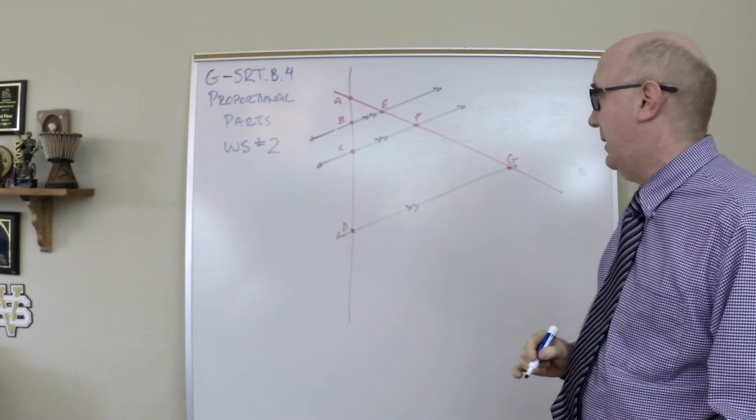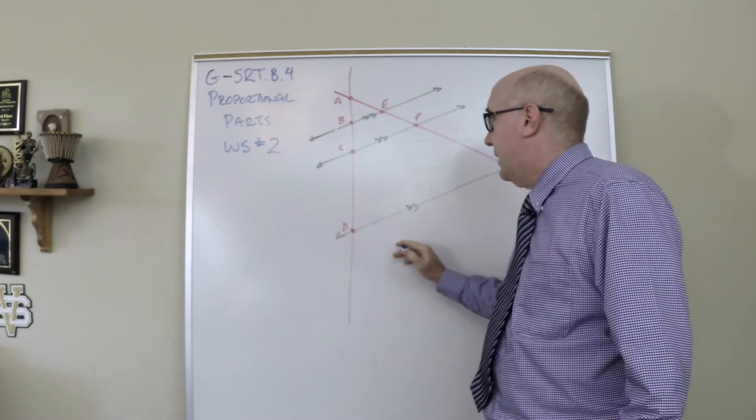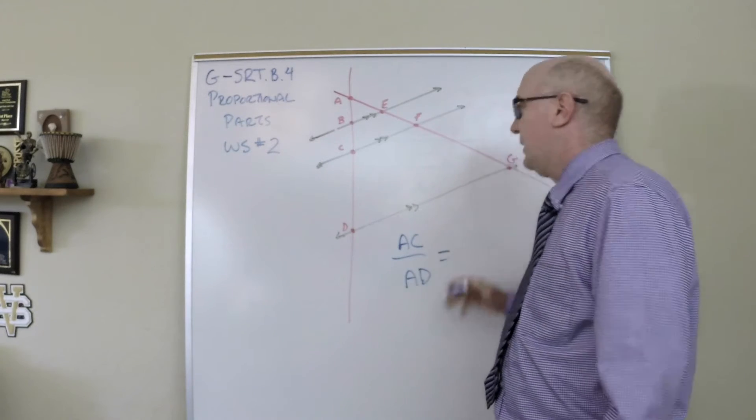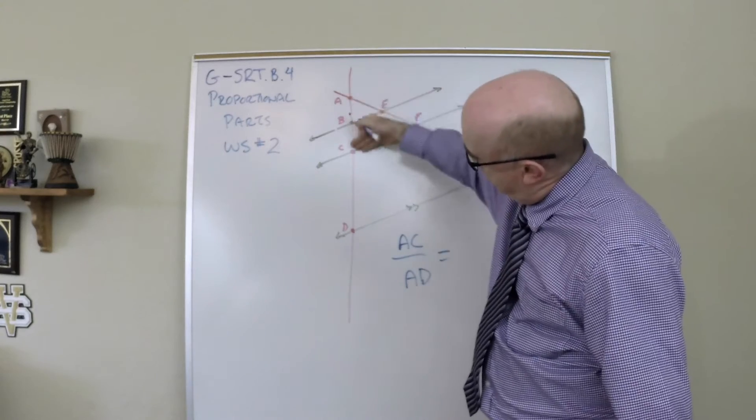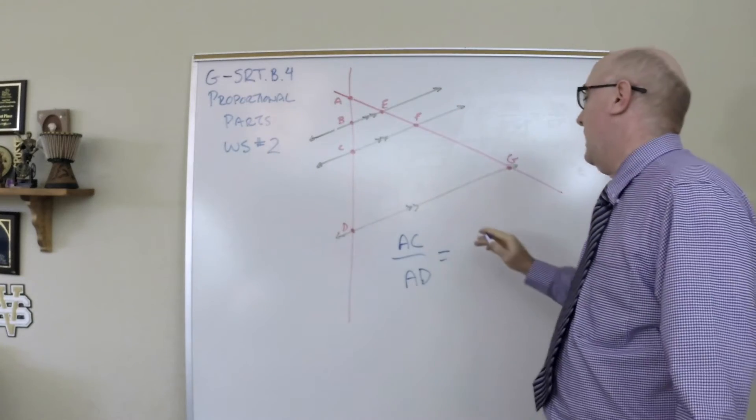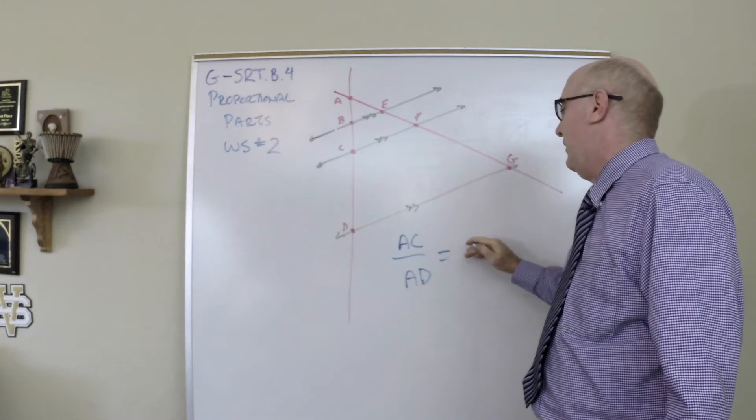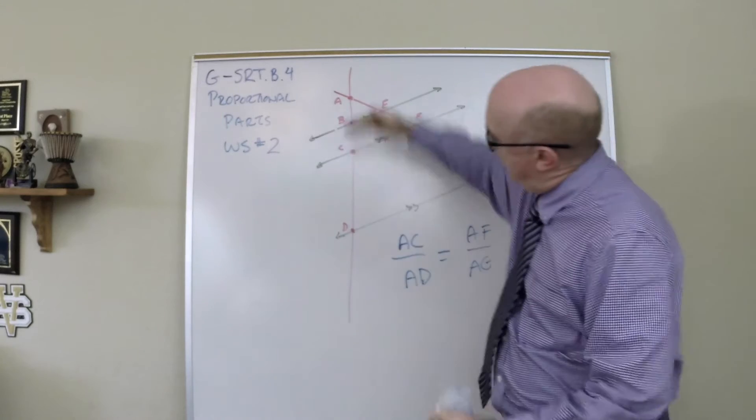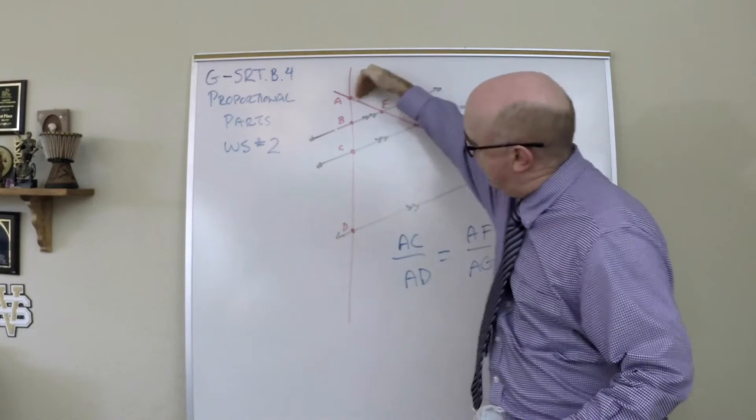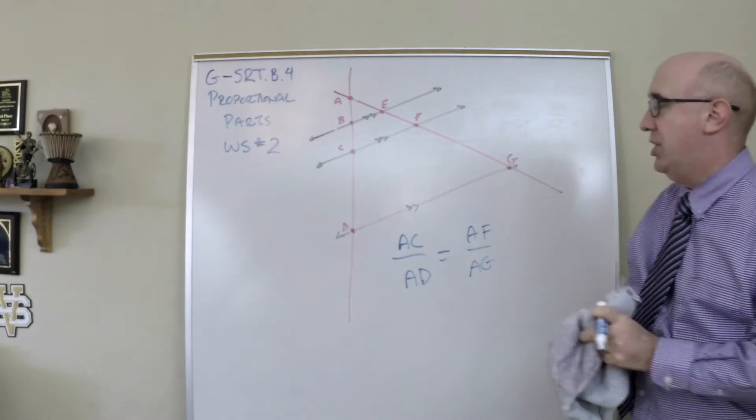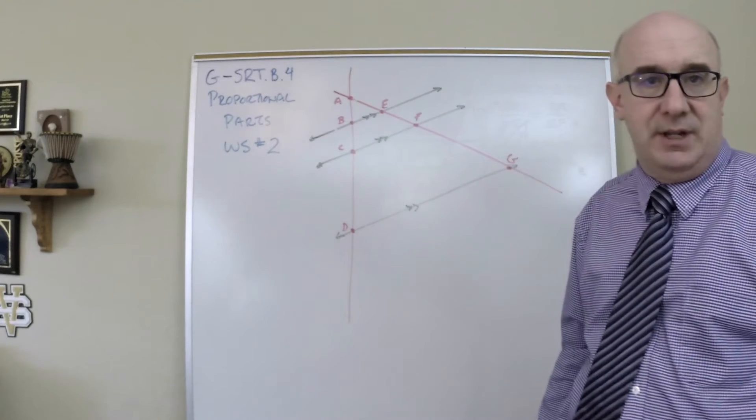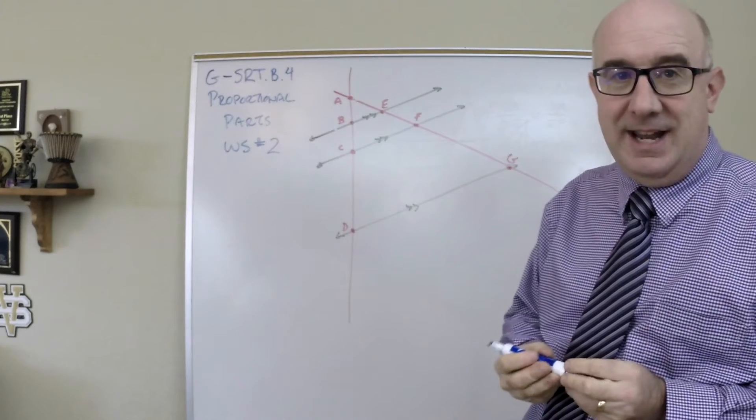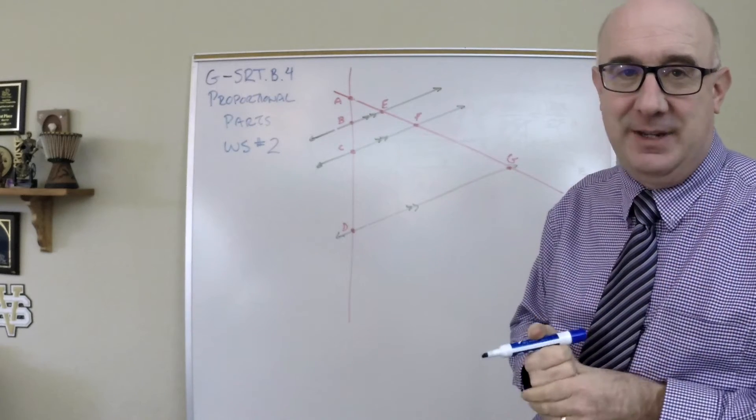You could do something like this: AC is to AD. Take a look here, we compare this piece to the full piece as AF is to AG. Let's make sure that looks good. AC is to AD as AF is to AG. Lots of ways to set these up.